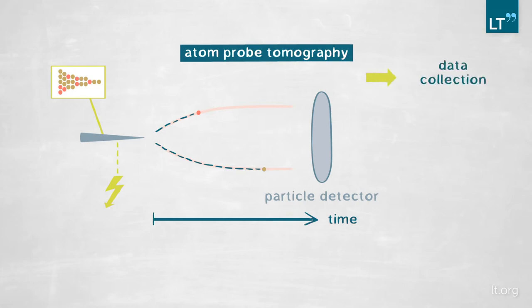So we collect these atoms, one after the other, a bit like we are peeling an onion. And we collect all of this data, and then we use a very powerful computer to reconstruct every atom at its original position.